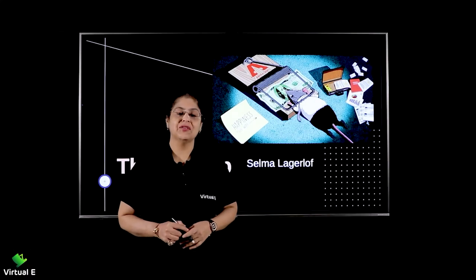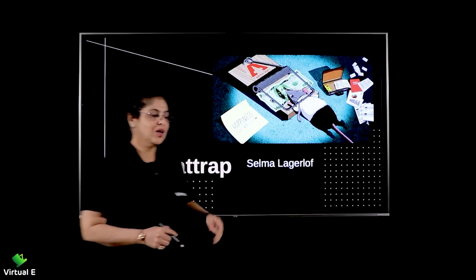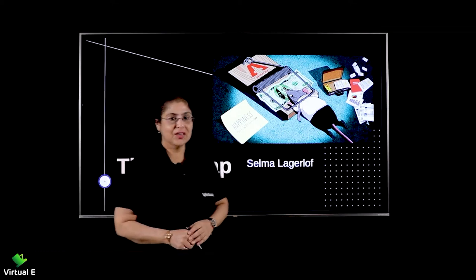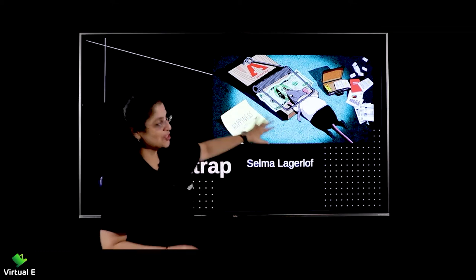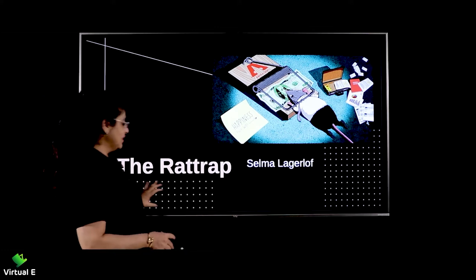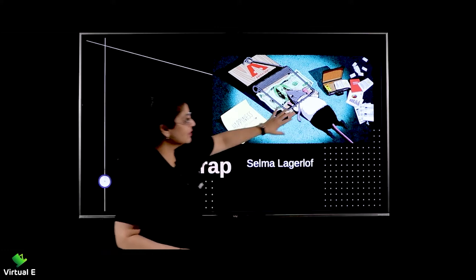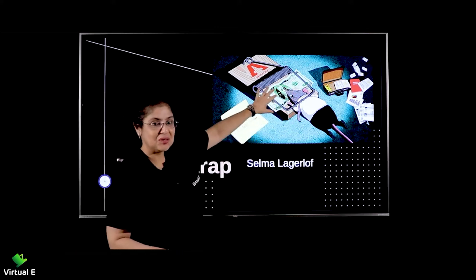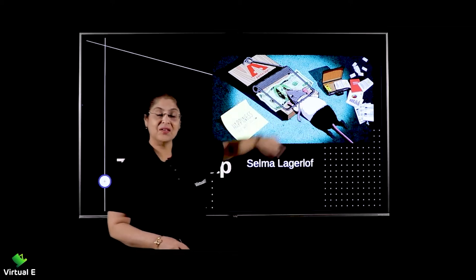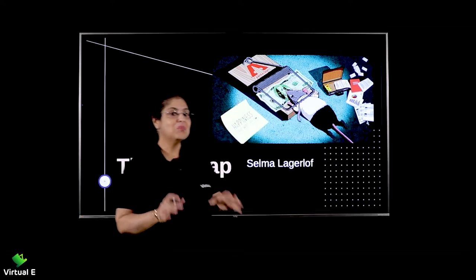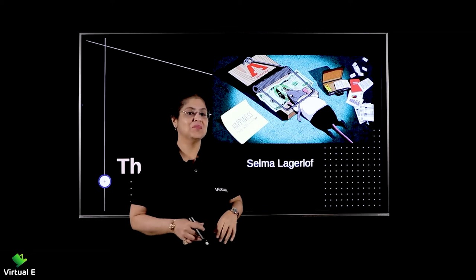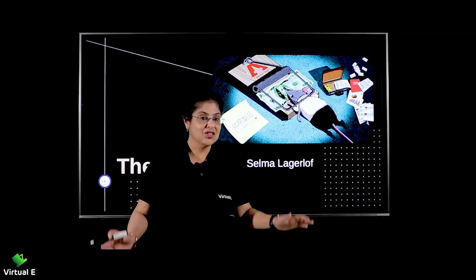Welcome to the next chapter of Flamingo: 'The Rat Trap' by Selma Lagerlöf. If you look at this picture, it tends to speak a lot. The rat is trapped — you have a dollar bill and the rat dressed in clothes. Basically, what she is trying to depict is Maya Jaal.